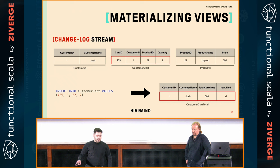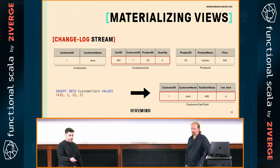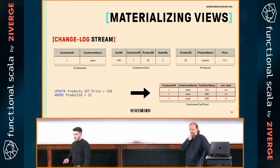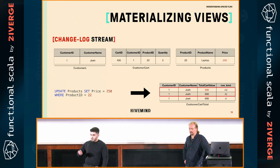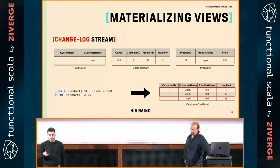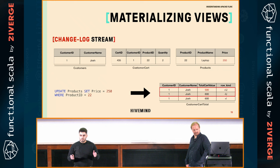For example: if I insert a cart for Josh with a quantity of 2 and the laptop price is 300, we get a total cart value of 600. Then if I change the price of the laptop from 300 to 250, we want to refresh that view and also get the change log — what happened to that view. So the total cart value was 600 before, but now with 250 multiplied by 2 it's 500. You can see the row kind tells you the operation: first it was insert, then update-before, then update-after. We want that CDC for views.